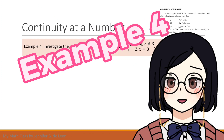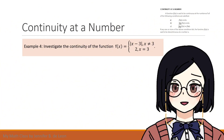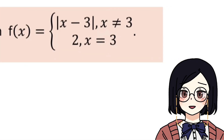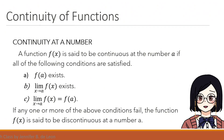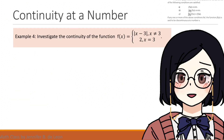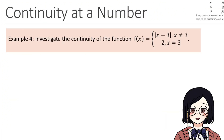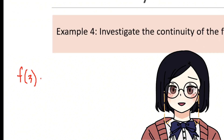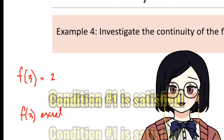Let's proceed to example number four: investigate the continuity of the function f(x) = |x - 3| where x is not equal to 3, and f(x) = 2 where x equals 3. We check whether the function satisfies the three conditions. We investigate whether f(3) exists. Using f(x) = 2 since the condition is x = 3, we get f(3) = 2. Since the result is a real number, f(3) exists, satisfying the first condition.